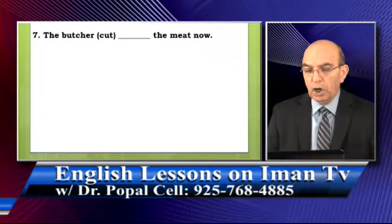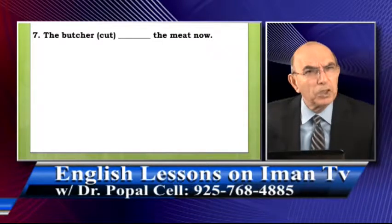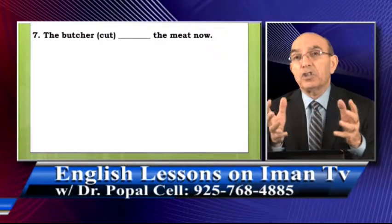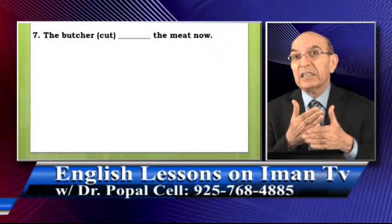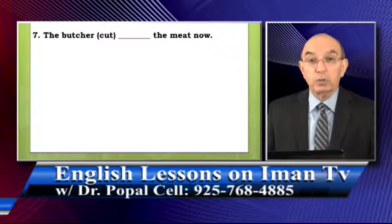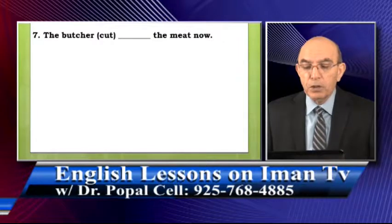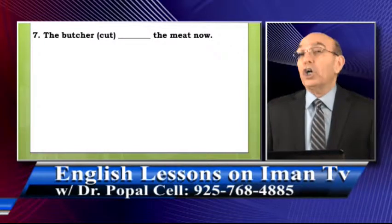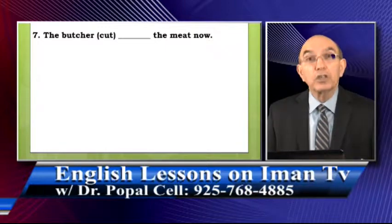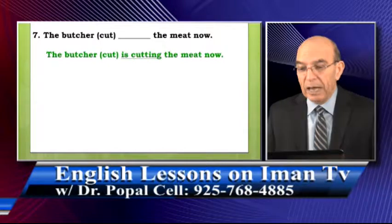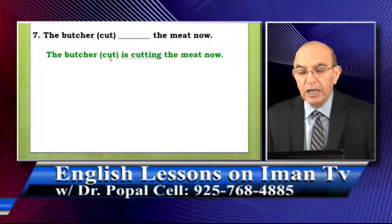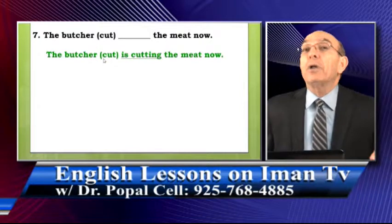Sentence number seven: 'The butcher cut the meat now.' A butcher is a person who slaughters animals and cuts meat. In Farsi, you call it 'qasab.' The spelling is B-U-T-C-H-E-R — the 't' is silent, you say 'butcher.' The correct answer is 'The butcher is cutting the meat now.' Note that 'cutting' has double 't' — because C-U-T has a vowel between two consonants, so you double the final consonant.